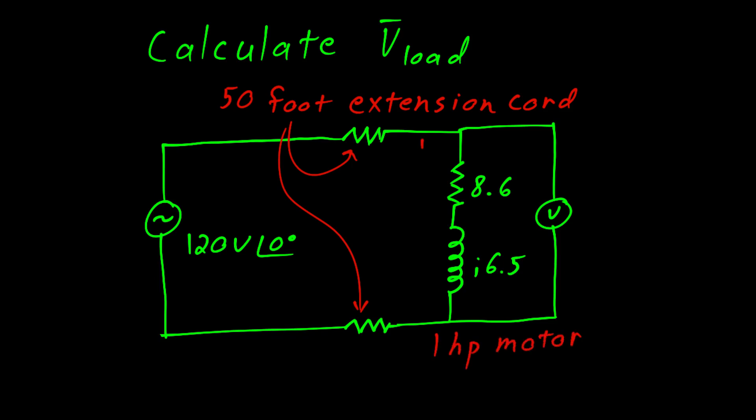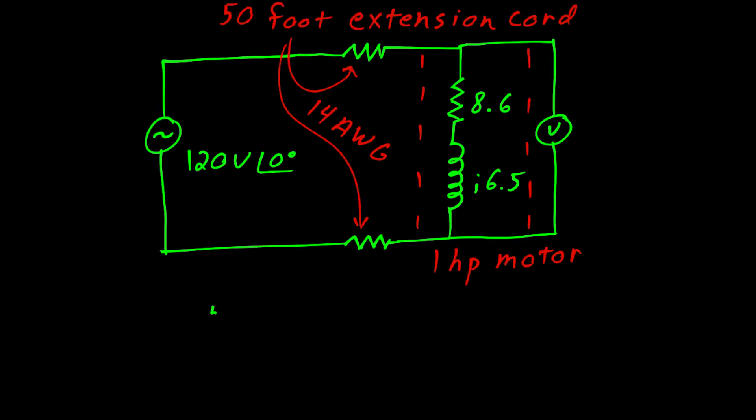The extension cord itself is composed of two strands of 14 AWG. That's 14 American wire gauge. When you look it up, you'll find that 14 AWG has a resistance of 2.525 ohms for every 1000 feet. In this particular problem, we have 50 feet, and using dimensional analysis, crossing out units, we determined that the resistance is about an eighth of an ohm.